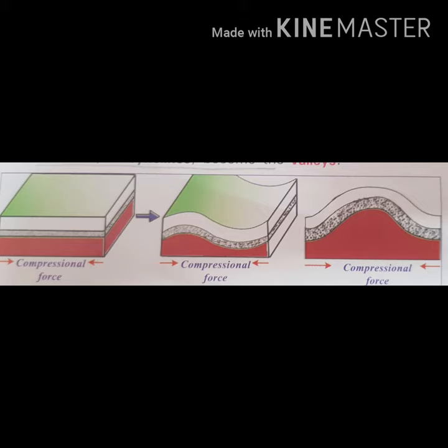However, weathering and erosion attack fold mountains as soon as they begin to form. Mountains whose peaks have eroded away and become rounded, and which are lower in height than newly formed mountains, are called old fold mountains. Examples of old fold mountains are the Appalachians, Urals, and Aravallis.